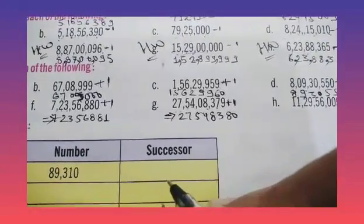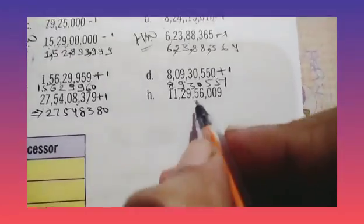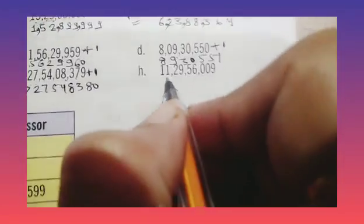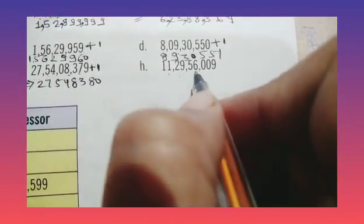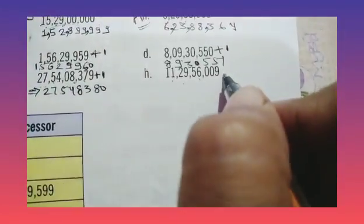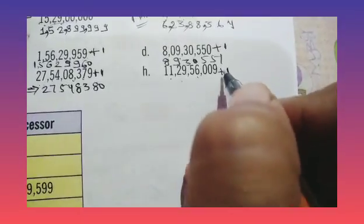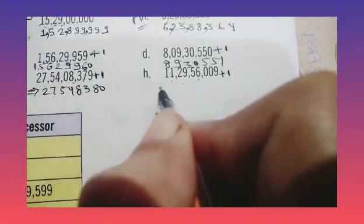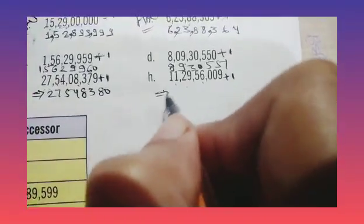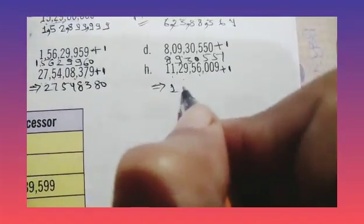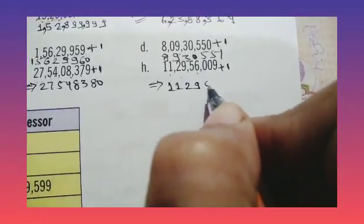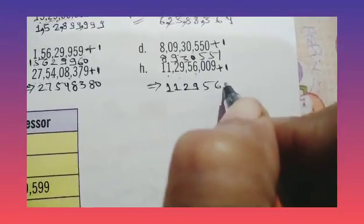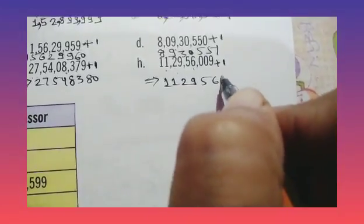Okay children? Now we have part H: it's 11 crore 29,56,009. If we add one number, it becomes 11 crore 29,56,010.